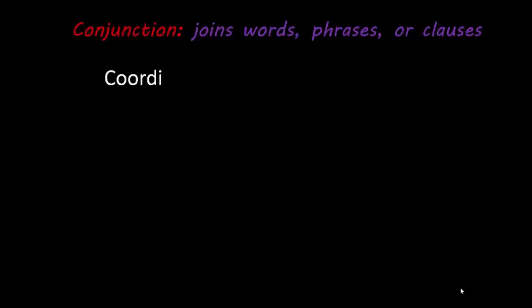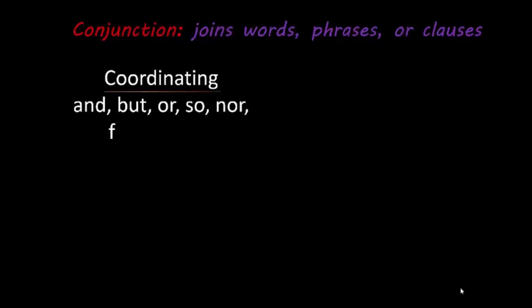Next, let's move on to conjunctions. A conjunction is a word that joins words, phrases, or clauses, and there are three types. First, there is the coordinating conjunction. Some examples of coordinating conjunctions are and, but, or, so, nor, for, and yet.